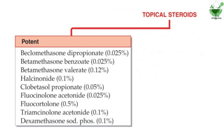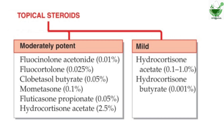The moderately potent topical steroids include fluocinolone acetonide, fluocortolone, clobetasol butyrate, mometasone, fluticasone propionate, and hydrocortisone acetate 2.5%. The mild topical steroids include hydrocortisone acetate 0.1%, and hydrocortisone butyrate 0.001%.